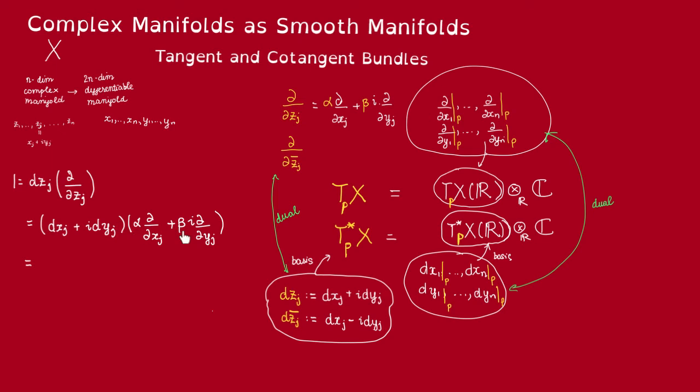Alright, so let's do this computation. This is dzj and this is the partial. We want to find this alpha and beta such that this is equal to 1. Now let's look.